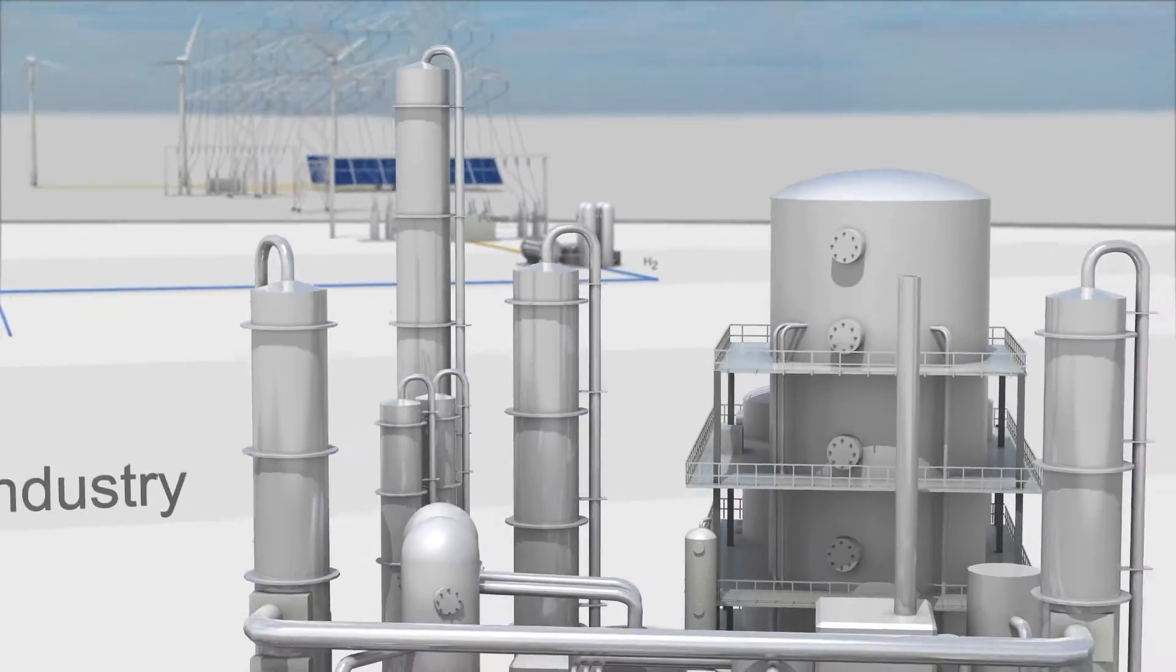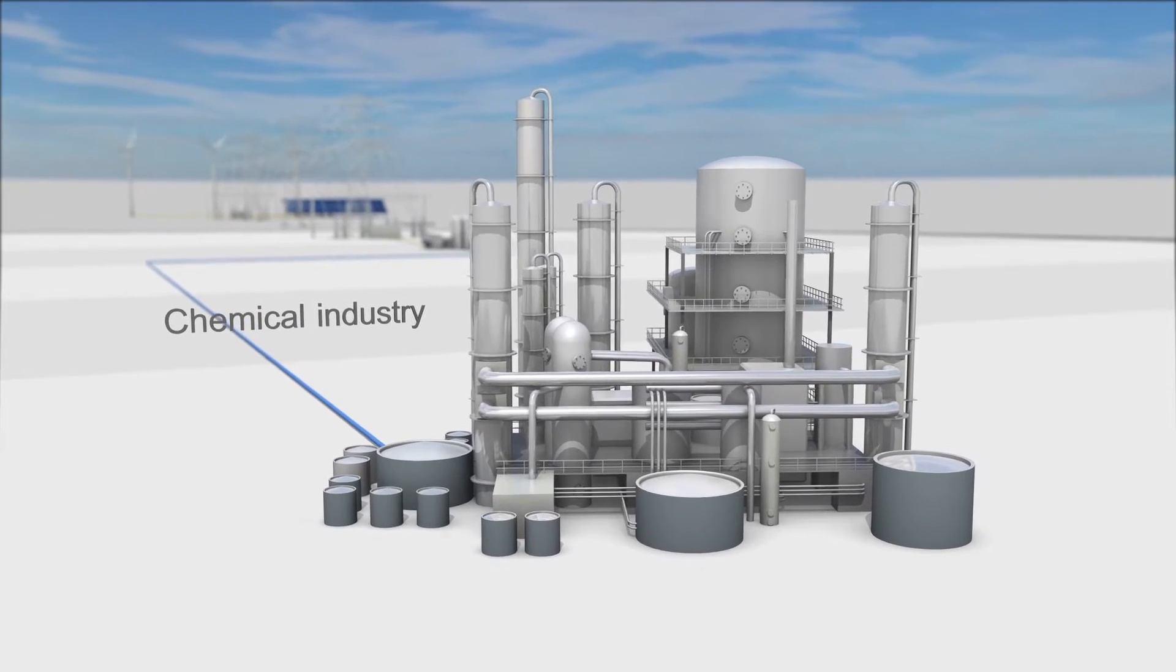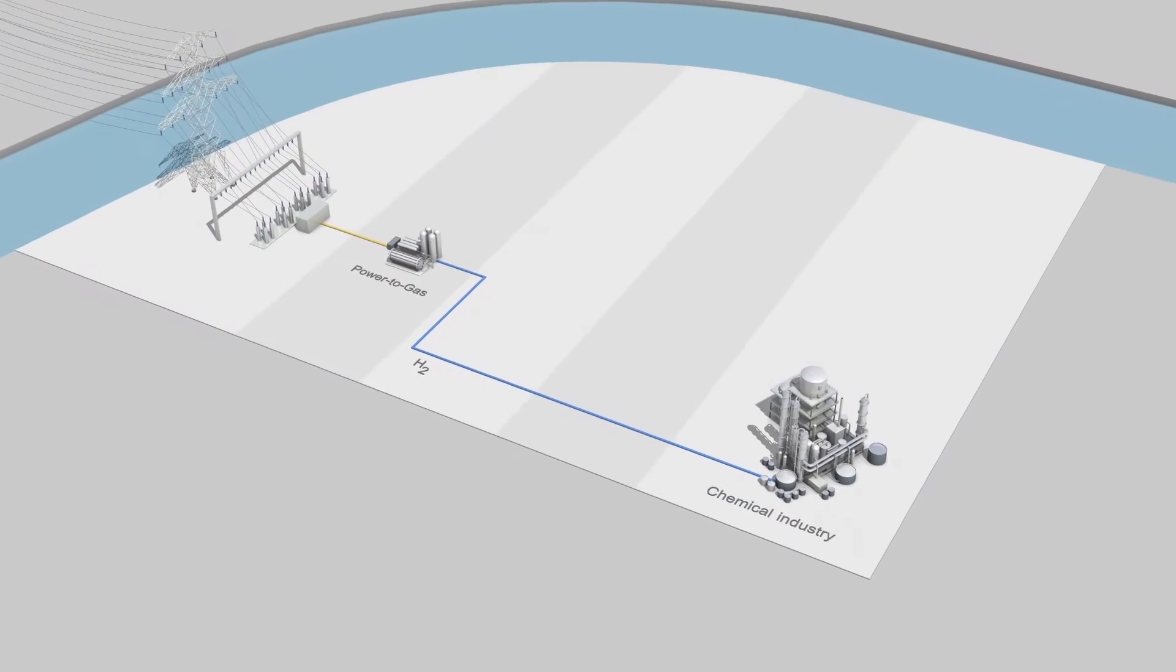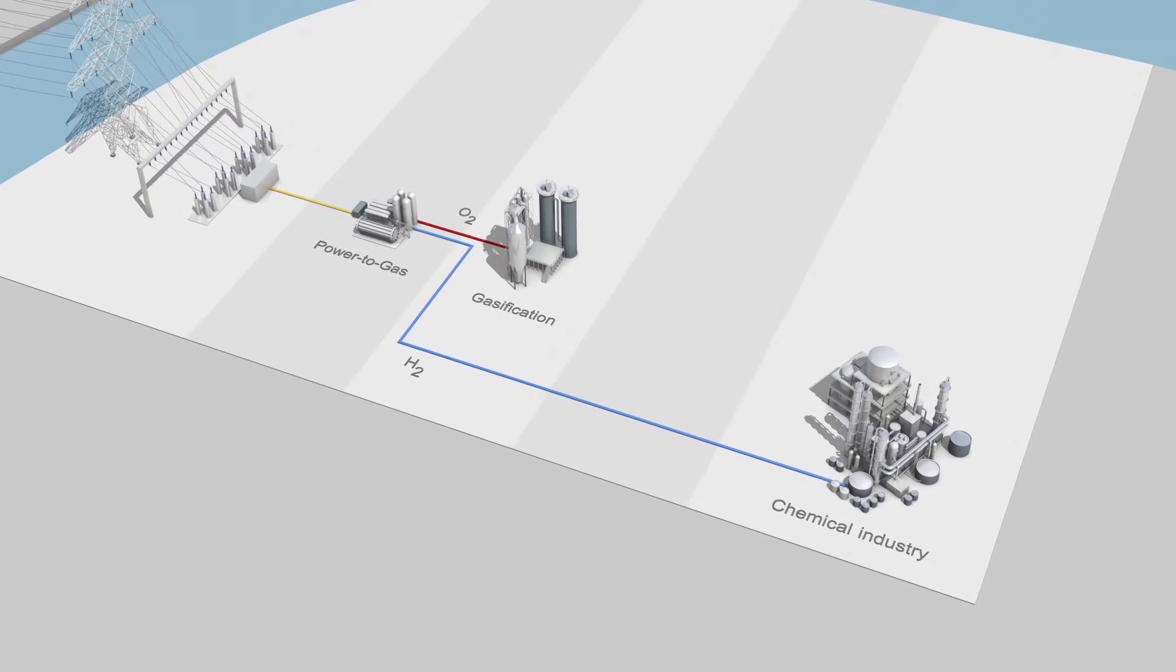Hydrogen finds its way to the chemical industry, where it is a widely used chemical feedstock. The oxygen, however, is an important ingredient in the next step of the value chain, gasification of biomass.